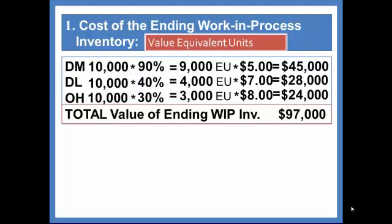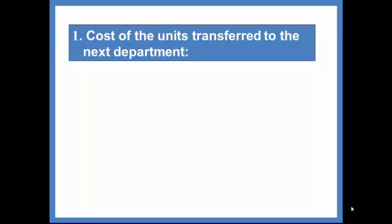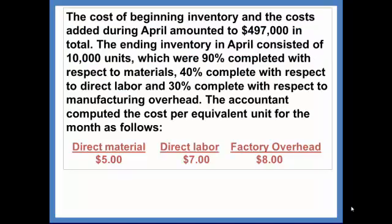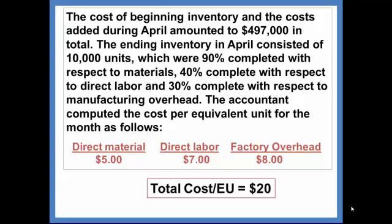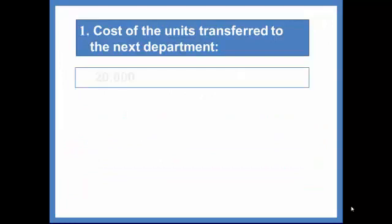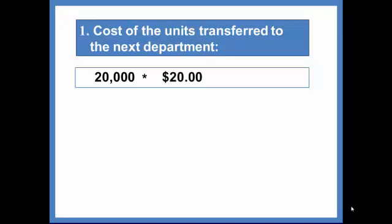We were also asked to value the 20,000 units that were completed and transferred to the next department. The direct material cost is $5 per equivalent unit, direct labor is $7, and factory overhead is $8. To value the units completed, we add 5 + 7 + 8 to get a total cost per equivalent unit of $20. Taking the 20,000 units — 100% complete as to direct materials, direct labor, and overhead — and multiplying by $20 gives a value of $400,000 assigned to the units transferred.